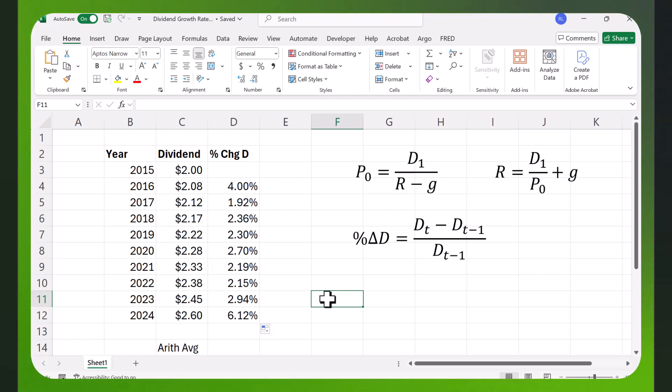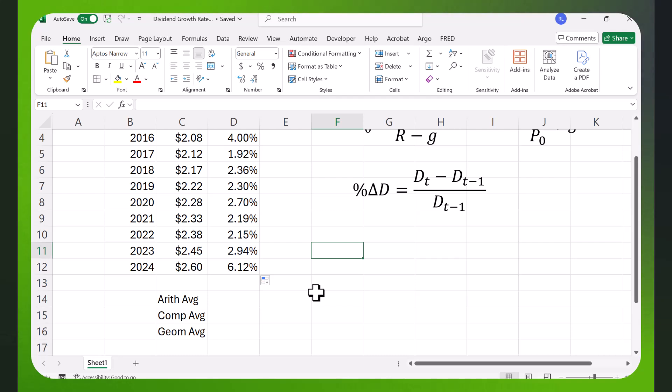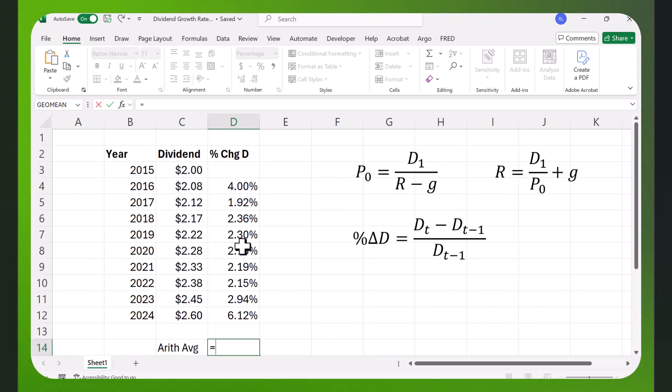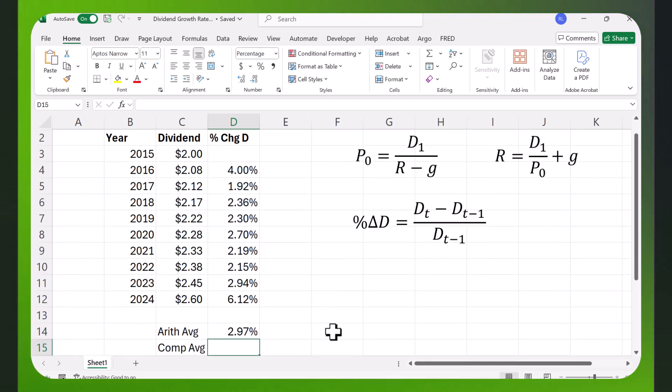The ways we can calculate it are we can find the arithmetic average. This would be just to add up all of these percentage changes and then divide by the number of observations. There are 10 years of data here and there are 9 changes in the dividend. We would just add up all of these numbers and divide by 9. Now Excel has a function that does that, it's called average. You can just put all of these numbers in and hit enter and you get 2.97%.